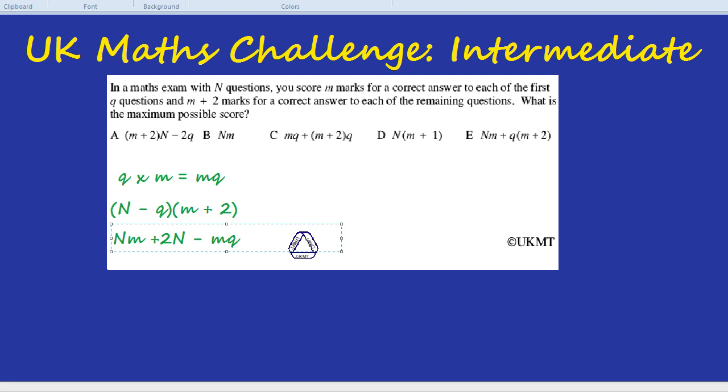The reason I'm writing it as MQ is I'm just keeping it alphabetical. I could write QM but generally we try to keep things alphabetical. Okay and the last one minus Q times 2 which is take away 2Q. There we go. So that's what all of this equaled.